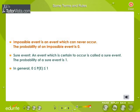Impossible event: An event which can never occur is called an impossible event. For example, the event of getting the number 7 on throwing a die once is an impossible event. The probability of an impossible event is 0.